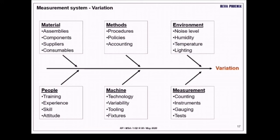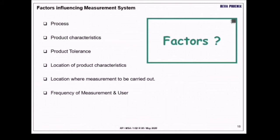This is what MSA or fundamental engineering work is all about. Material based variations, method based variations, environmental based variations, measurement based variations, machine based variations. For example, technology, variability, tools, fixtures. And lastly, people based variations.